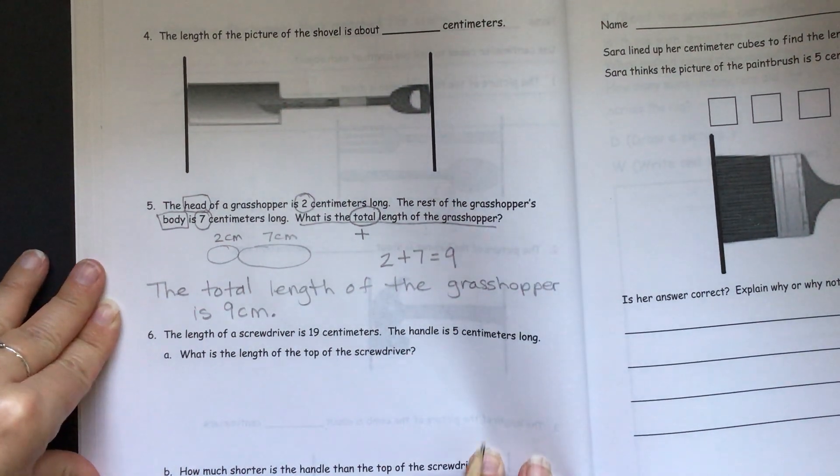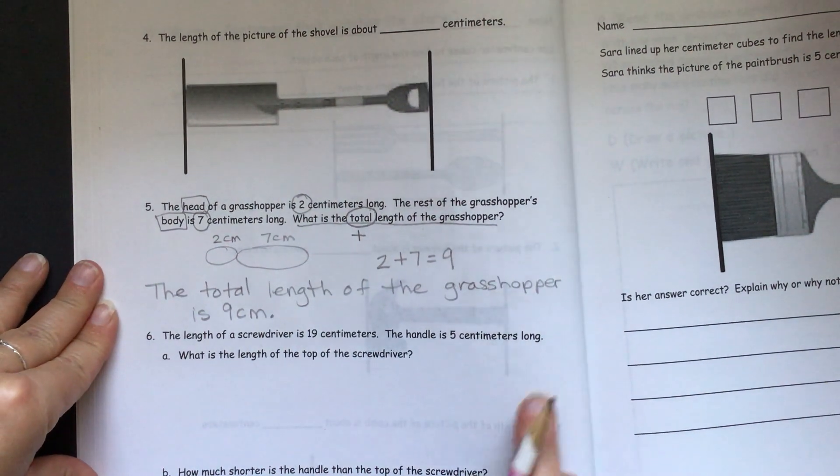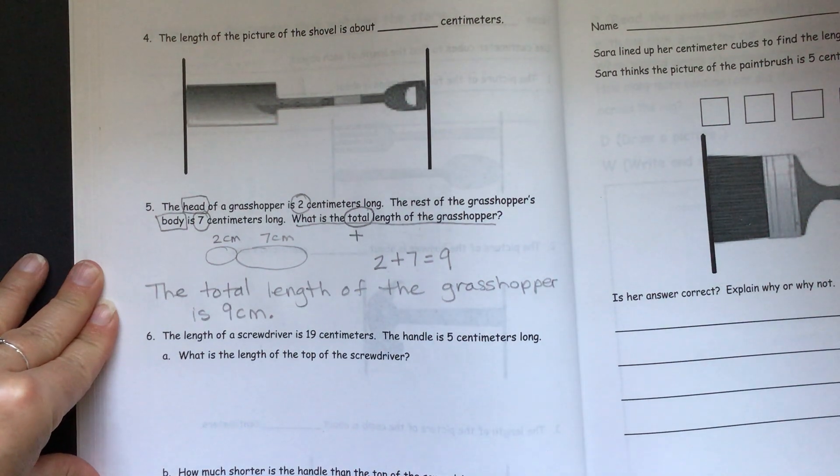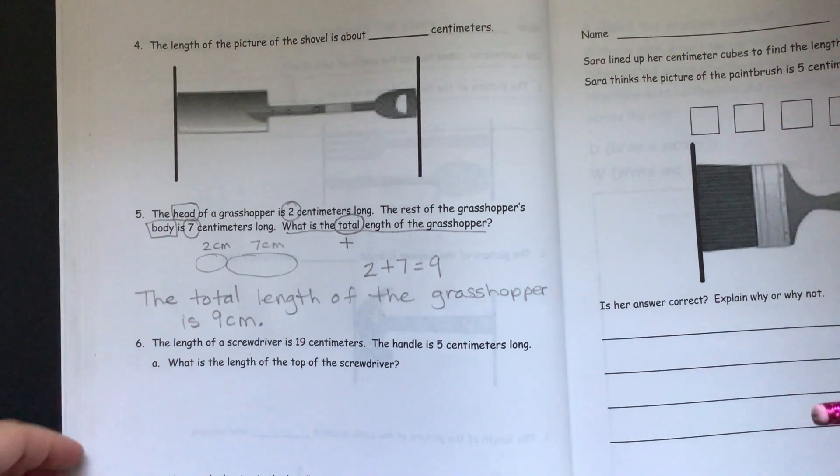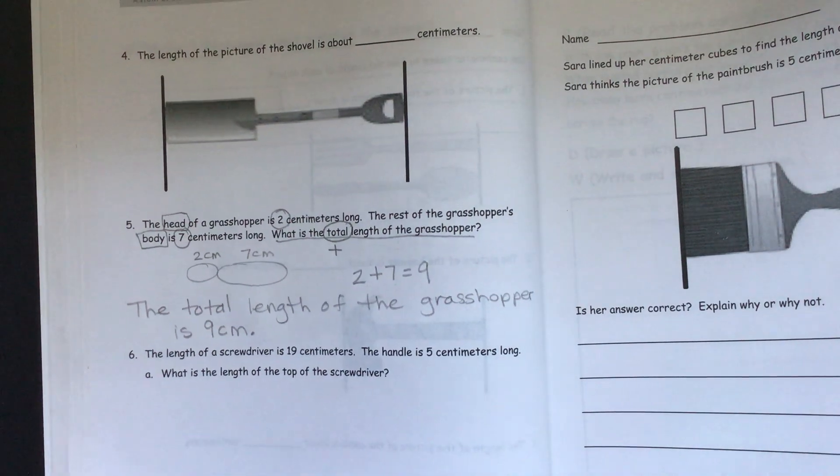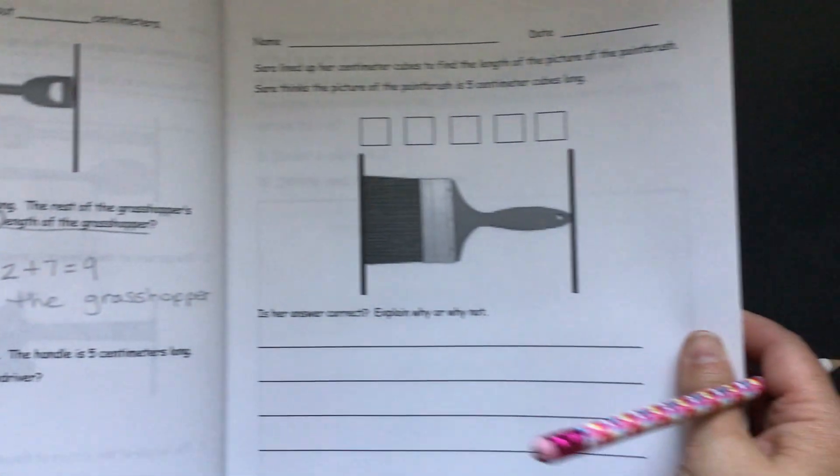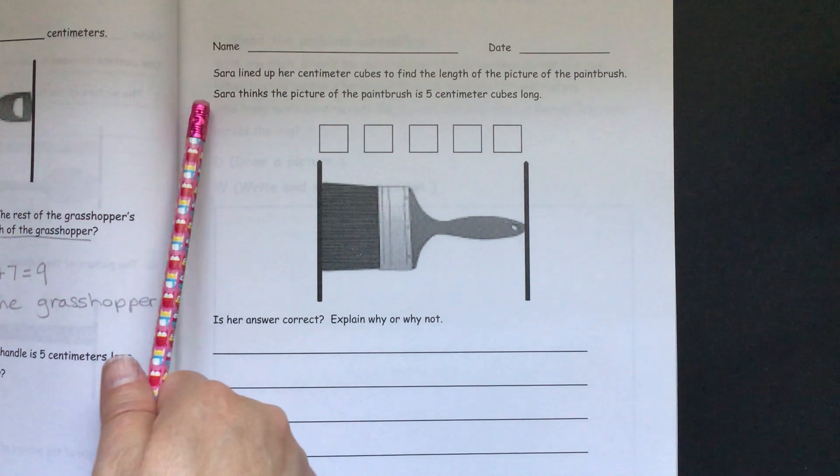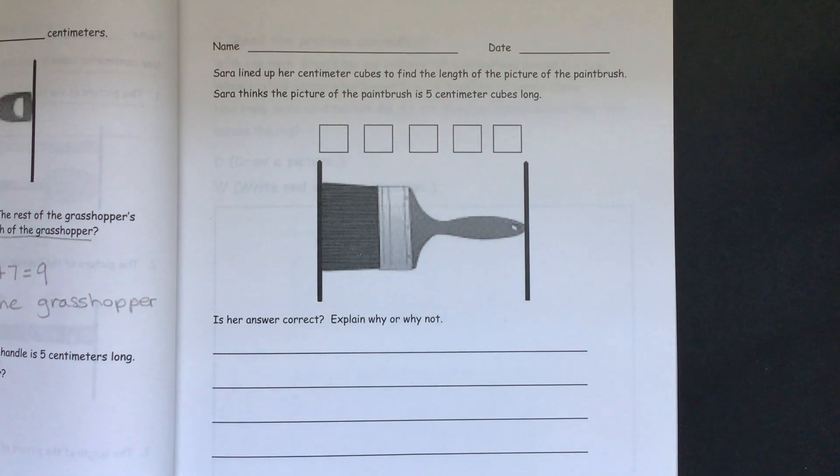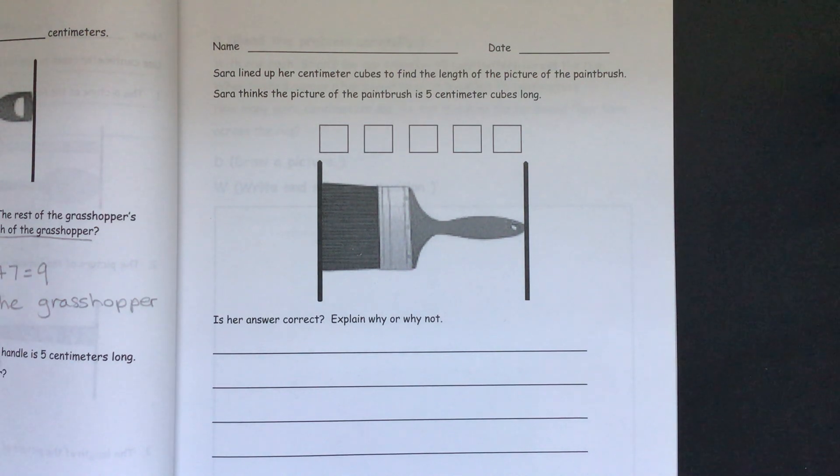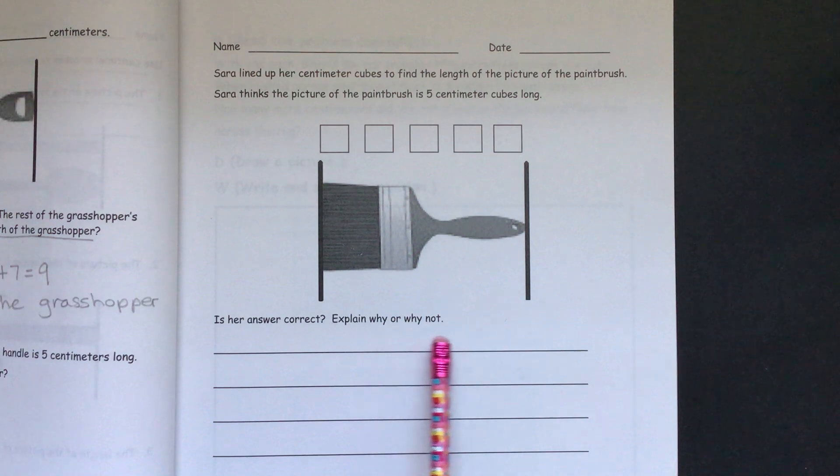There you go. And so then when you do your exit ticket, it says Sarah lined up her centimeter cubes to find the length of the picture of the paintbrush. Sarah thinks the picture of the paintbrush is five centimeter cubes long. Is her answer correct? Explain why or why not?